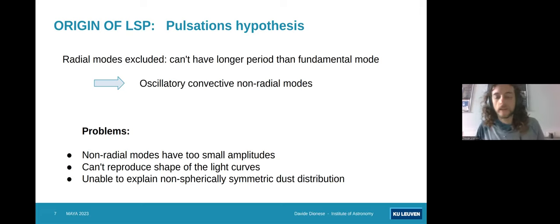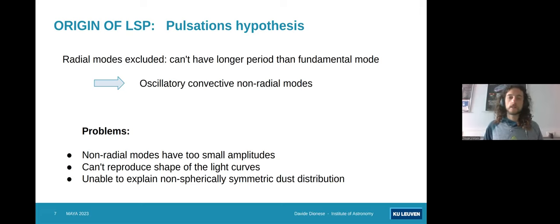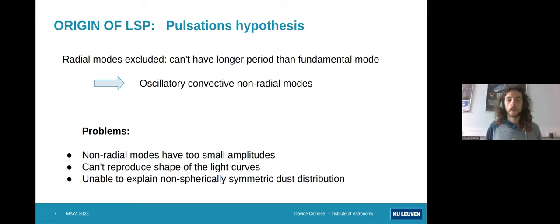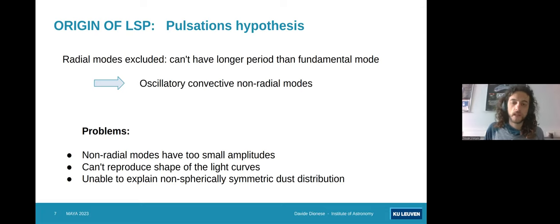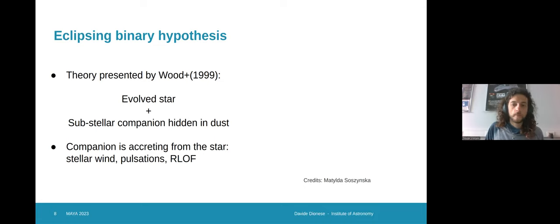The origin behind the long secondary periods has been studied for quite a few years and several hypotheses have been proposed. One of them is that they are caused by pulsations, as with the other oscillations. If this were the case, we would have to exclude radial modes, since we are looking at periods longer than the fundamental mode, so they would need to be non-radial modes. There are a few problems with this hypothesis — for example, these modes tend to have quite smaller amplitudes than what we observe, and we wouldn't really be able to reproduce the shape of the light curves with pulsations. Also, a non-spherically symmetric distribution of dust has been observed around these stars, which couldn't be explained by pulsations.